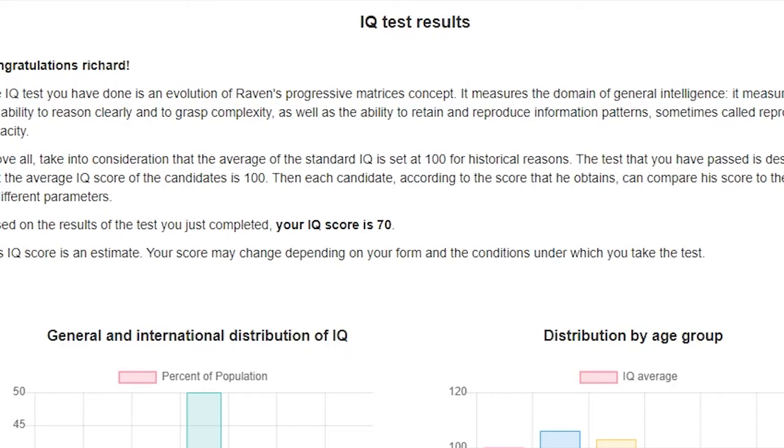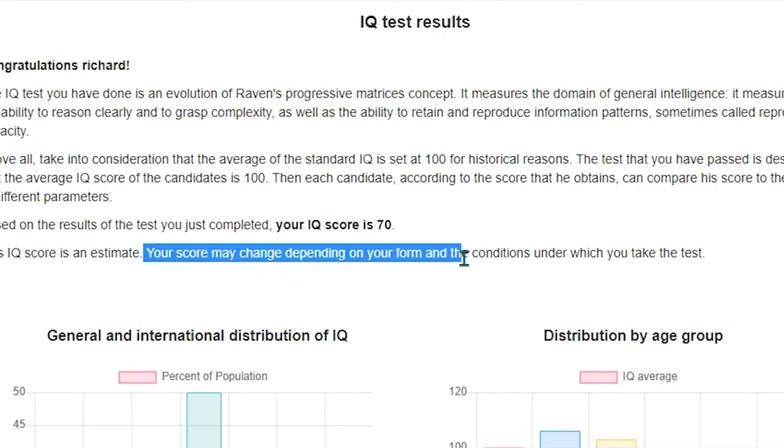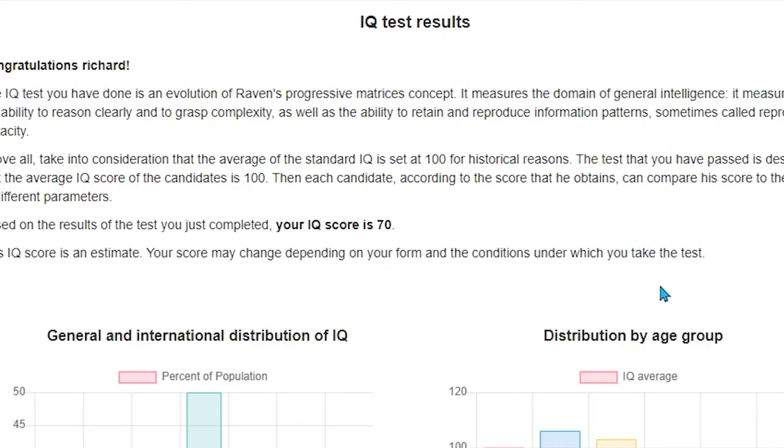Because I got the average IQ of the world wrong in the first place, right? Listen, in eighth grade when I did that test I got a 94, I know what I got. Okay, there's no way I dropped to mental retardation level in four years. That's funny shit though, that is funny. Yeah, your score may change depending on your form and the conditions under which you take the test. Dude listen, I'm sipping on Smoothie King right now, I'm more focused on the smoothie than the actual test, you know?